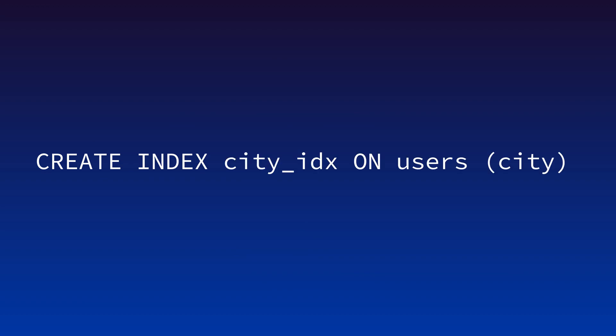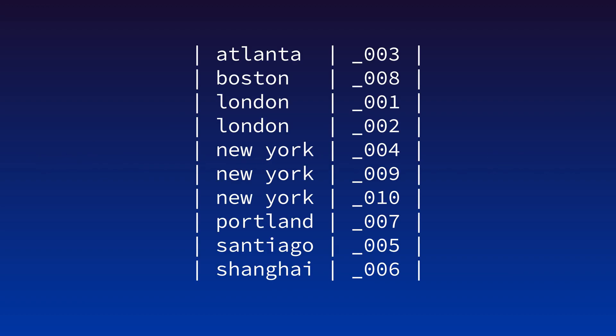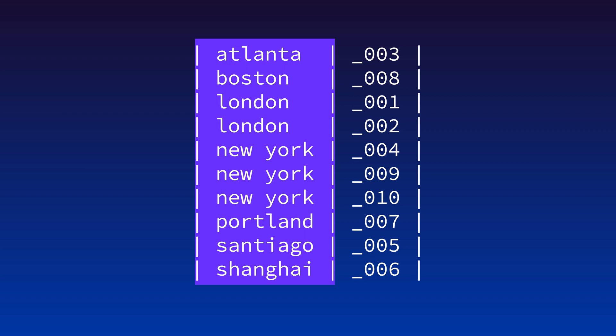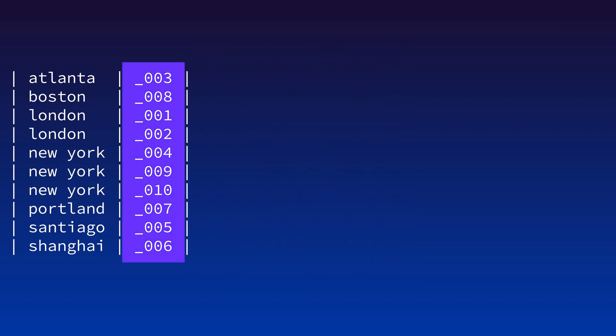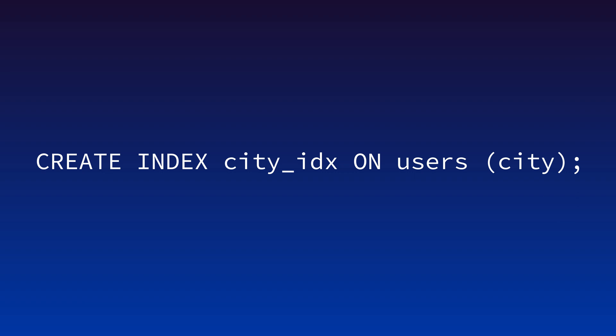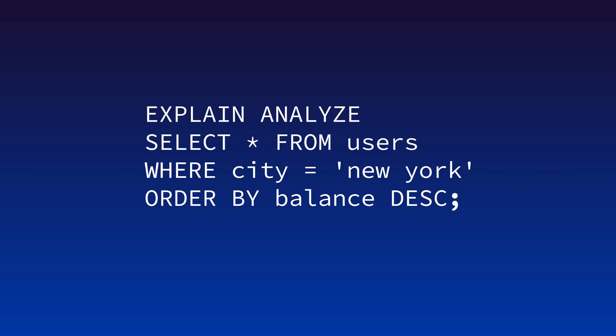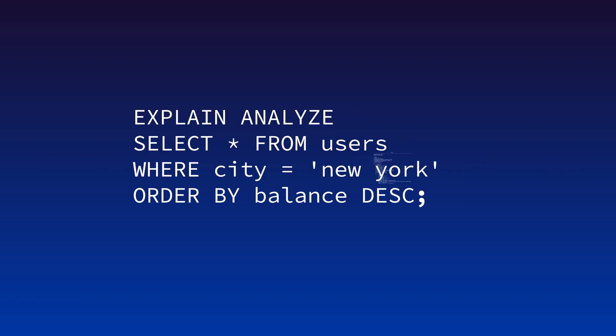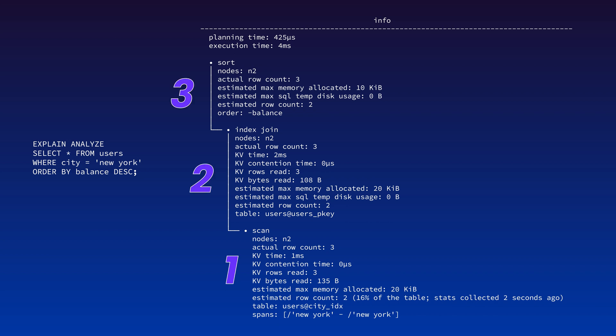The solution to this problem is to use indexes. A SQL index is basically a sorted list with the values from one or more rows of a table, plus a pointer value that tells the database where to find the rest of the data from that row. Let's create an index on the city column for our table. Now that we've created the index, we can run EXPLAIN ANALYZE again. This is still a three-step process, but it is more efficient — the query is only searching the New York rows thanks to our index, rather than scanning through the entire table.